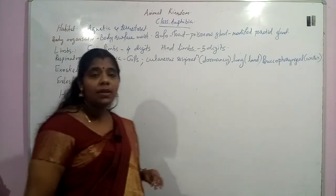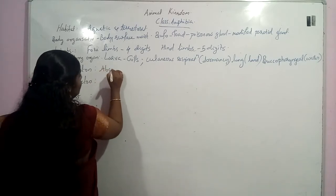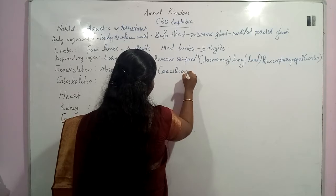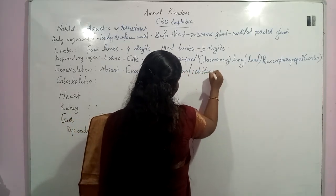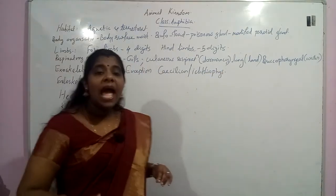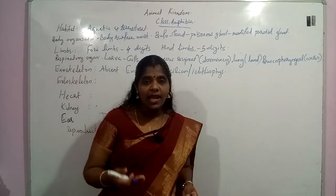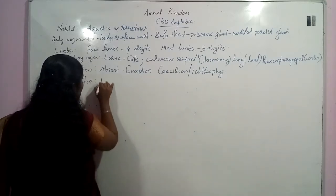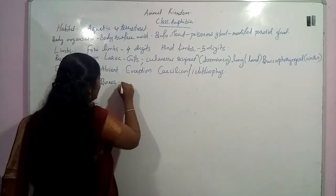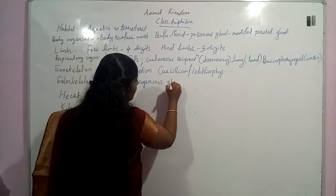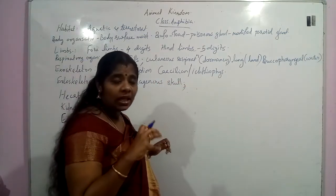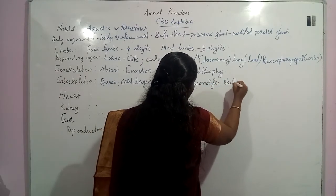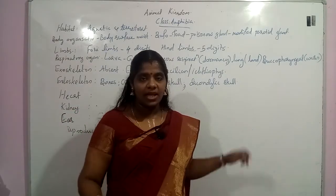The exoskeleton is mostly absent in this group. An exception is Caecilia (Ichthyophis), which has a calcite exoskeleton present just beneath the skin. The endoskeleton has bones, and the skull is made with cartilage. The skull is of the dicondylic type — the brain is connected to the spinal cord through two condyles, that is the dicondylic skull.